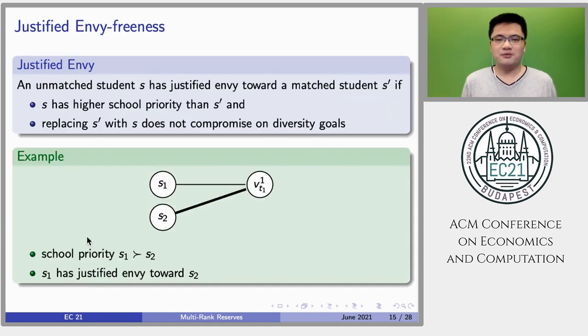The third property is justified envy-freeness. We say an unmatched student S has justified envy toward a matched student S' if two conditions hold. First, student S has higher school priority than S'. And second, replacing S' with S does not compromise on diversity goals.